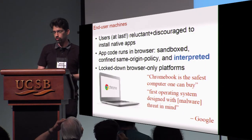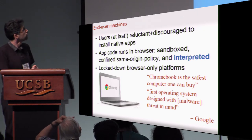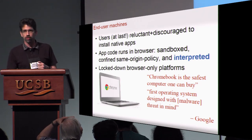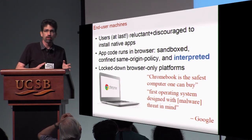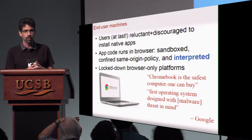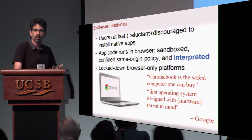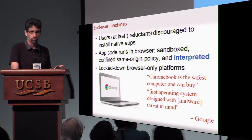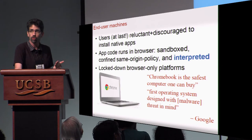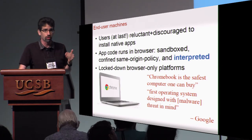But what about typical end-user platforms — a single user on their own simple device? Users used to just download random software from the Internet and run it, but nowadays users are finally getting reluctant to install arbitrary native applications, and are actively discouraged from doing so by operating systems. Increasingly, application code runs within browsers, within web pages or browser plug-ins, where it is sandboxed, subject to the same-origin policy, and crucially, run as interpreted code like JavaScript.